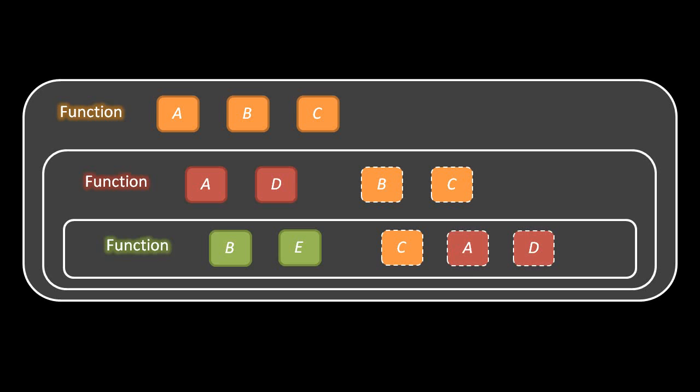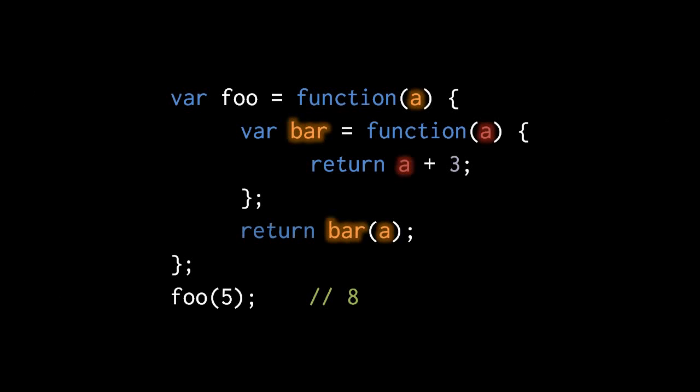Also notice that in the green function, a refers to a of the red function, not a of the orange function, because the green function is most immediately contained by the red function, so it sees that one first. To restate the rule: an inner function can see all the variables of its outer functions, unless there's a name conflict. In a slight modification of the code, instead of the interior function having a parameter named b it has a parameter named a, even though the outer function also has a parameter named a — the local variable a of the interior function is just a totally separate variable, and that doesn't hinder us in this case.